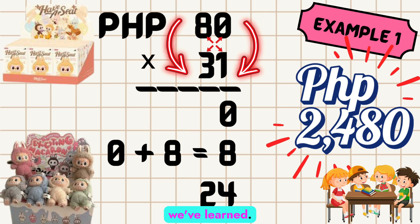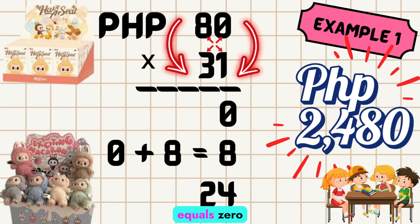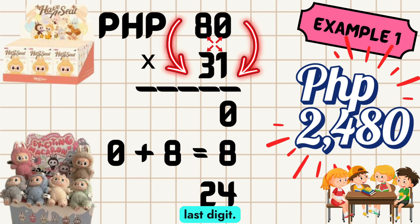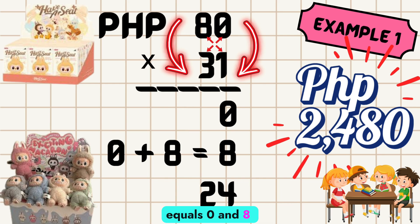Let's apply what we've learned. Let's start from right to left. First, multiply 0 times 1, which equals 0, then write 0 as the last digit. Now following the middle diagram, multiply 0 times 3 and 8 times 1, which equals 0 and 8 respectively.